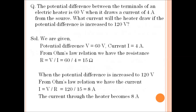Next question: The potential difference between the terminals of an electric heater is 60 volt when it draws a current of 4 ampere from the source. What current will the heater draw if the potential difference is increased to 120 volt? This question has two parts — first calculate resistance, then find current. Given V = 60 V and I = 4 A, applying Ohm's law gives resistance = 15 Ω. In the second part, voltage increases to 120 V with the same resistance, so applying Ohm's law gives current = 8 ampere.